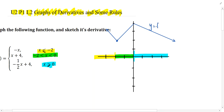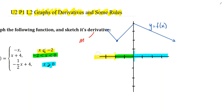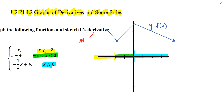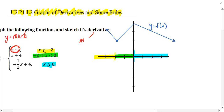This is the original graph f of x. The next thing we need to do is sketch its derivative. Remember, the derivative function is the slope function, so the slope of each of these lines should guide the derivative graph. For x values less than negative 2, since this is a linear function the slopes don't change — for each of those points the slope is negative 1. So for x values less than or equal to negative 2, I draw the horizontal line y equals negative 1.